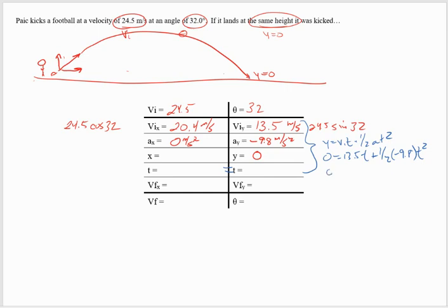If I simplify that, I have zero equals 13.5 T minus 4.9 T squared. I can pull a T out and say zero equals 13.5 minus 4.9 T times T. So I have two solutions here.